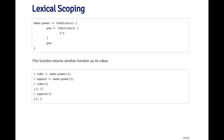Inside the pow function, x is a function argument, so that's not a problem. But n is a free variable because it's not defined inside the pow function. However, n is defined inside the make.power function. Since that's the environment in which pow is defined, the pow function will find the value of n inside that other environment.